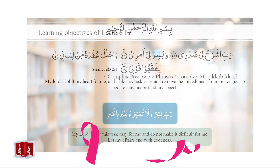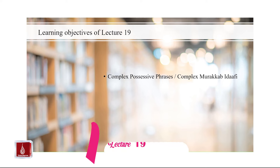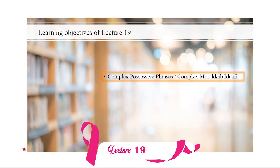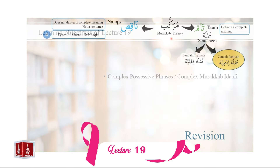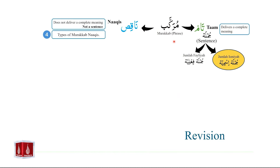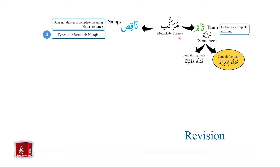In this lecture, we will study complex possessive phrases. Let us start with the revision of Murakkab Tam and Murakkab Nakis. A Murakkab is made by the combination of at least two words. Each word is called Mufrad. Mufrad plus Mufrad equals Murakkab. Murakkab can also be called a phrase. In Arabic grammar, there are two types of Murakkab: Murakkab Tam and Murakkab Nakis.